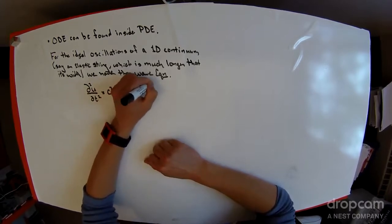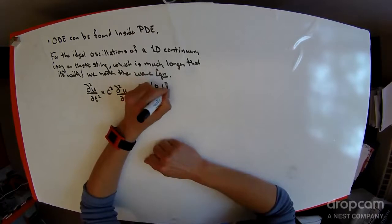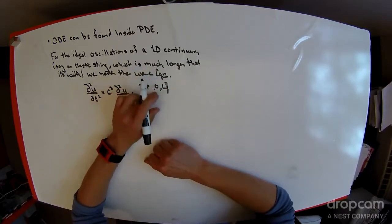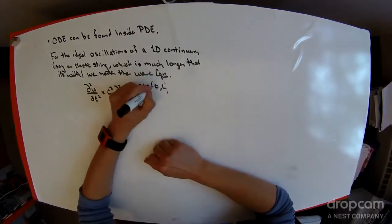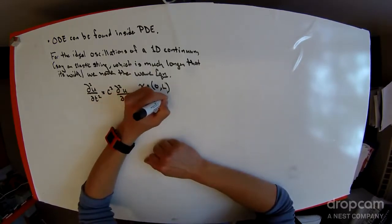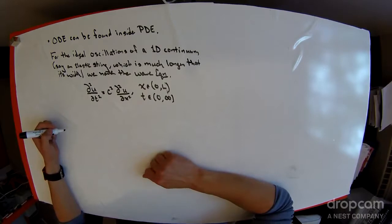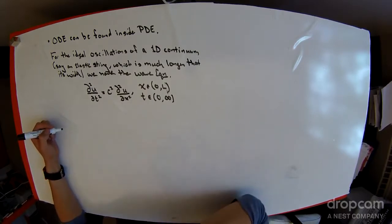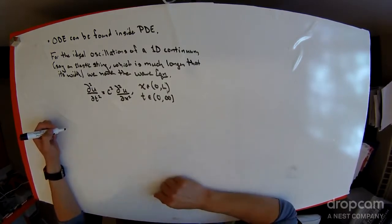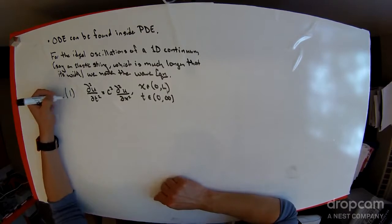x is going to be some variable between 0 and L, and time is going to go from 0 to infinity. This can be derived by analyzing the tensile forces on an ideally elastic string or through energy considerations, but here we'll just take it as equation one and take it as a given.